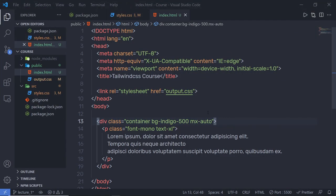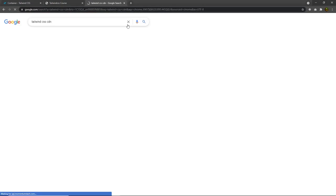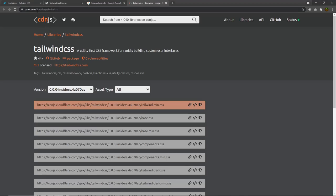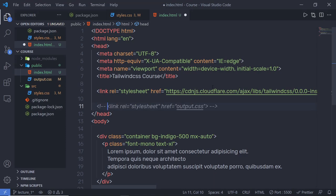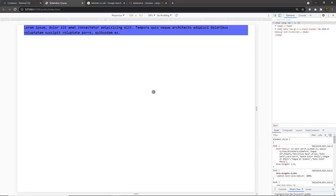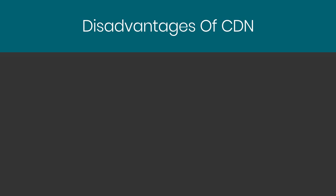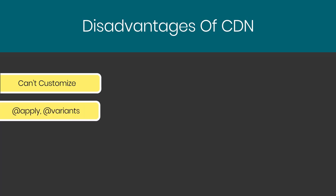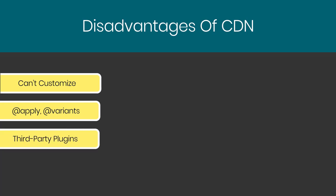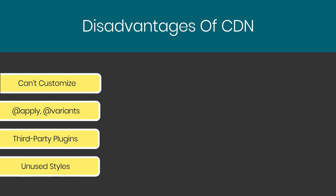Let's take a look at how you can install Tailwind CSS using CDN. Just search for Tailwind CSS CDN and head on to cdnjs.com. Once you open cdnjs.com, you can copy the link by clicking on the copy link tag and paste it in your HTML. Now you don't need the output.css — you can comment it out. But there are many disadvantages of using CDN. Tailwind CSS works great with npm. If you try to use CDN, then you can't customize the default theme of Tailwind, you can't use any directives like apply or variants, you can't add additional variants, you can't install third-party plugins, and you can't remove unused styles from the Tailwind default file.